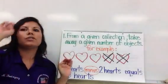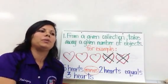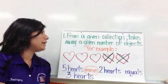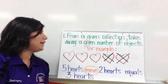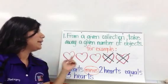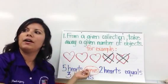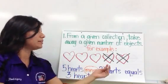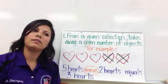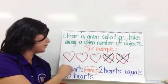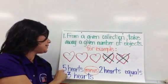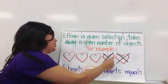Today we will discuss three different methods you can use when it comes to subtracting. The first method says: from a given collection, take away a given number of objects. For example, here I have a picture of five hearts. Two of these hearts have X's on them, meaning I have crossed them out. The reason we crossed them out is because the sentence says five hearts,